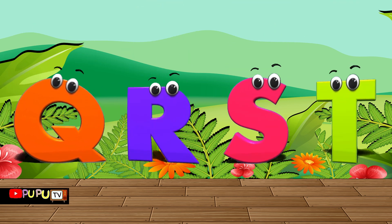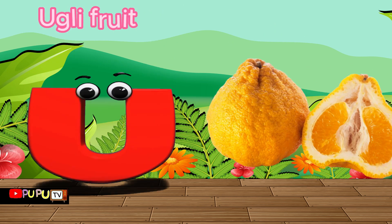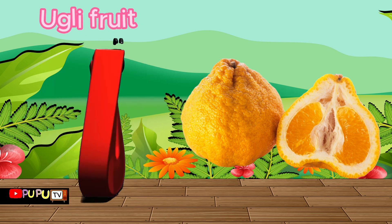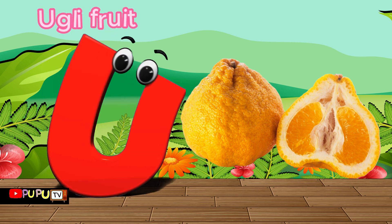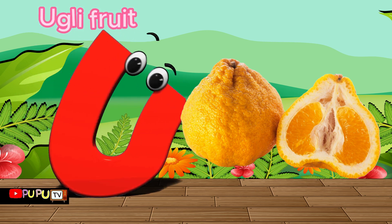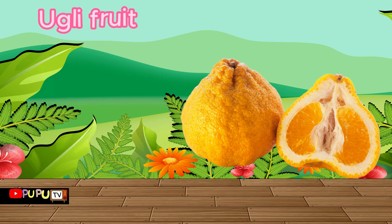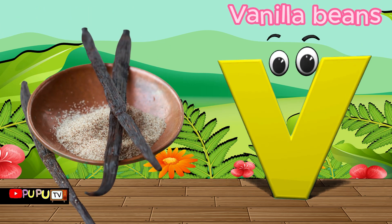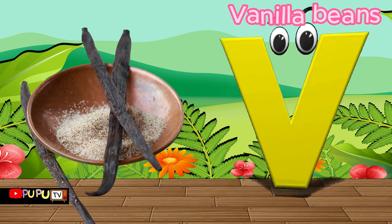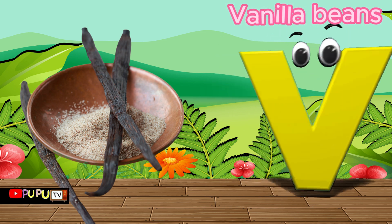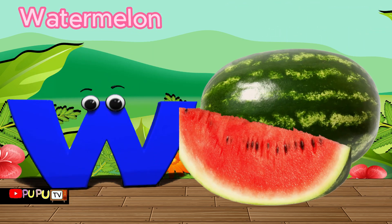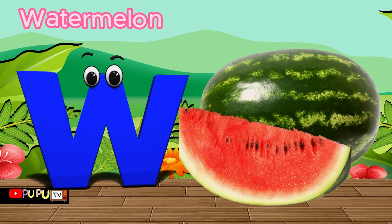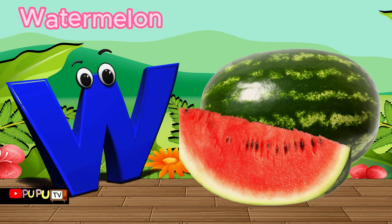U is for ugly fruit, ugly fruit. V is for vanilla beans, v-v-v, vanilla beans. W is for watermelon, w-w-watermelon.